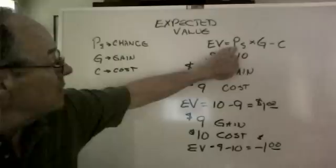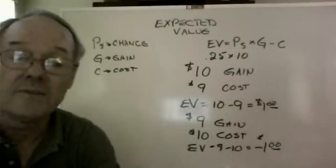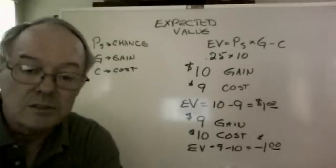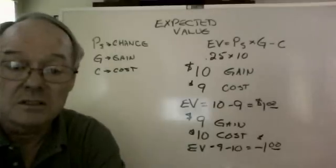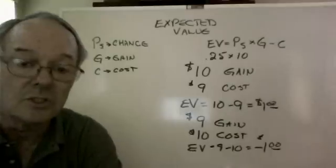Well, if the formula says P sub s times G minus C, we can multiply it to 10 times .25 and get $2.50. So if we paid $2, clearly there would be a positive result of $0.50. But if we paid $3, no, it's going to be a negative result, and it's not a good decision.